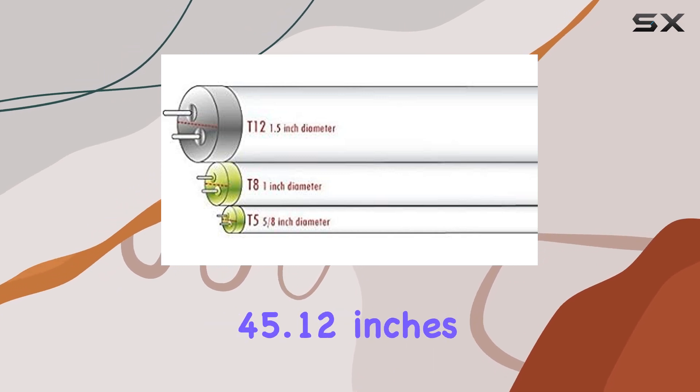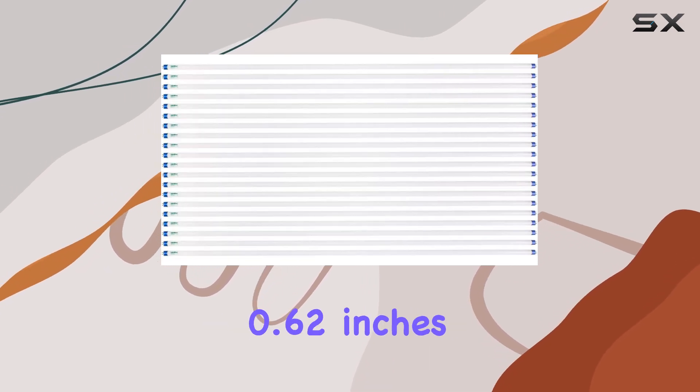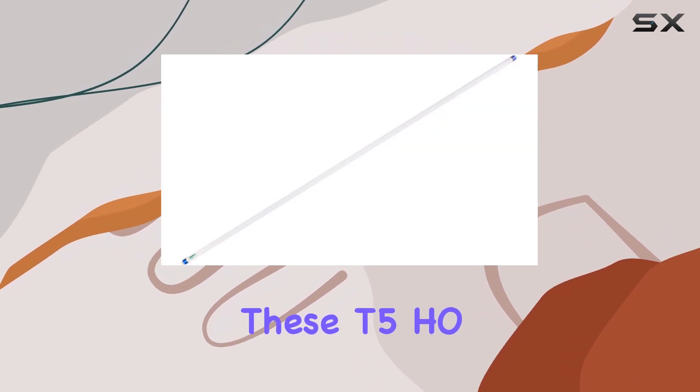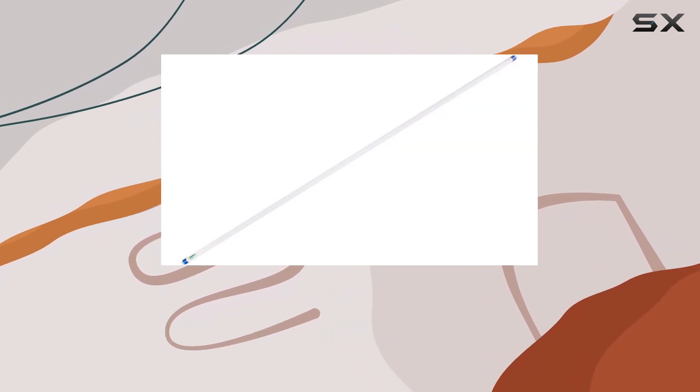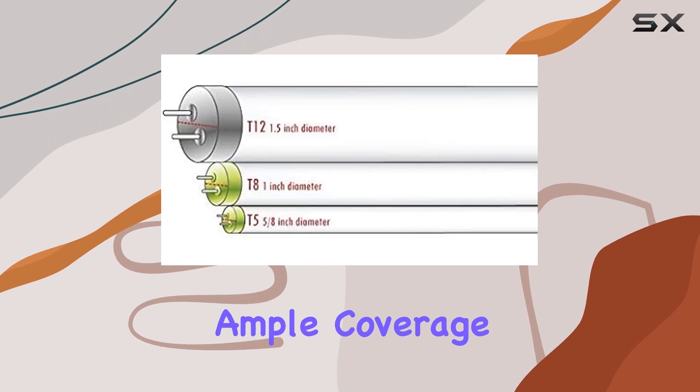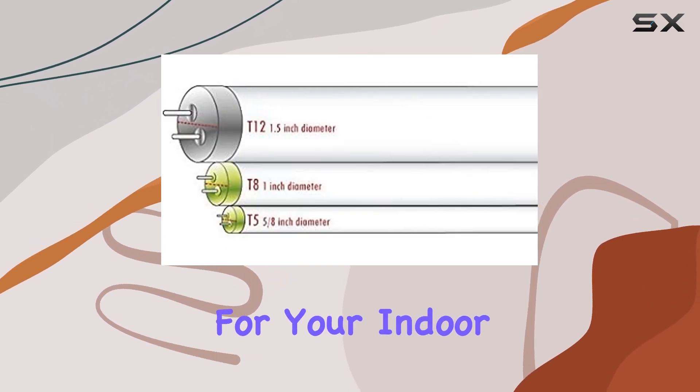Measuring 45.12 inches in length and 0.62 inches in diameter, these T5HO bulbs are perfect for fitting into standard fluorescent fixtures, providing ample coverage and intensity for your indoor garden.